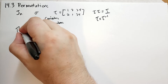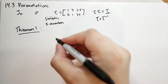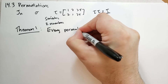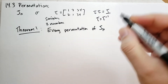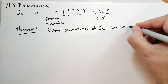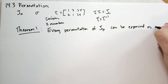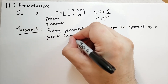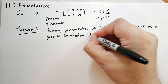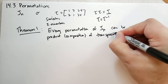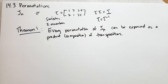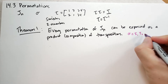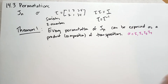Let's go ahead and dive into Theorem 1. Theorem 1 says that every permutation of J_n can be expressed as a product of transpositions — and by product he means a composition of transpositions. So what this means is that if we had sigma, which is some permutation, we can always rewrite that as some product of a bunch of different transpositions.